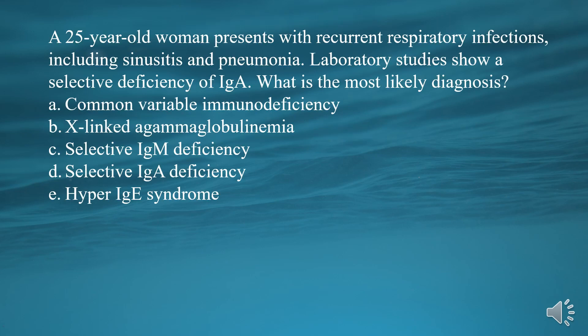A 25-year-old woman presents with recurrent respiratory infections, including sinusitis and pneumonia. Laboratory studies show a selective deficiency of IGA. What is the most likely diagnosis?